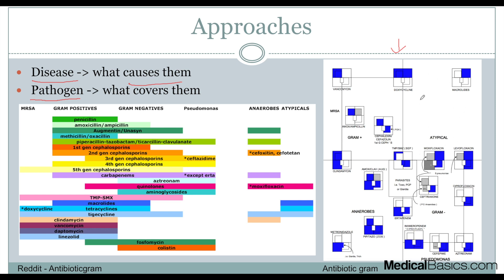This antibiogram is broken down by quadrants. Up here is atypical, gram-positive, MRSA, anaerobes, gram-negatives, pseudomonas, as well as parasites. Based on what's shaded, that's what's covered. We'll take doxycycline as an example — it's going to have atypical coverage, gram-positive, and also MRSA coverage. Now let's look at Cipro — it's going to have gram-positive coverage as well as pseudomonas coverage. This is one easy way you can think about the best resource to find online and stick with once you're dealt a pathogen.